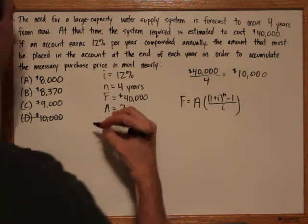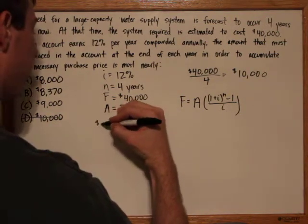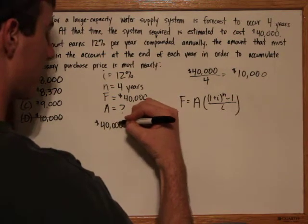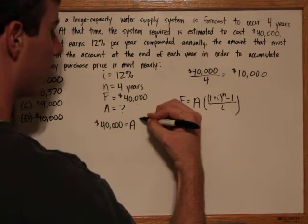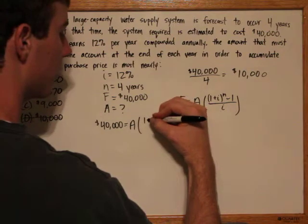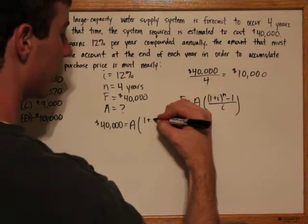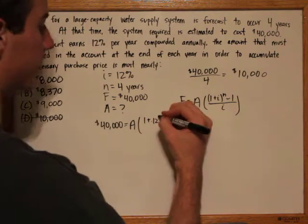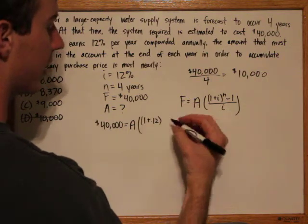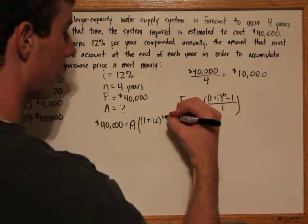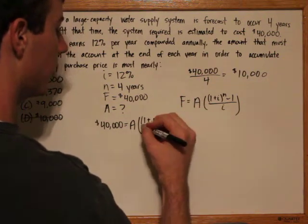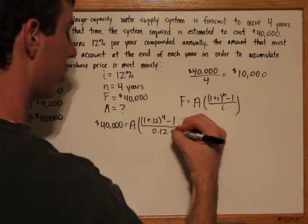So plugging in what we know, we know that f is $40,000, a is unknown, then we have one plus the interest rate, which we'll do in decimal, raised to the amount of time, which is four years, minus one, all over the interest rate, again in decimal equivalent.